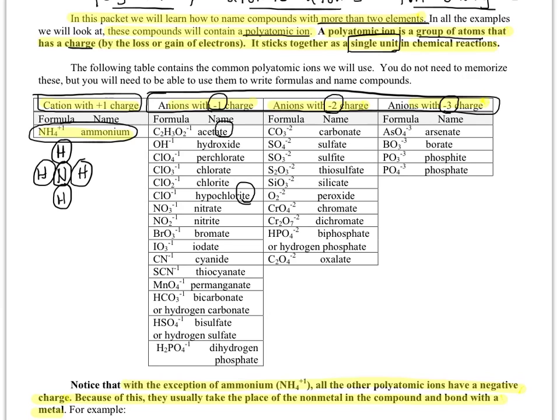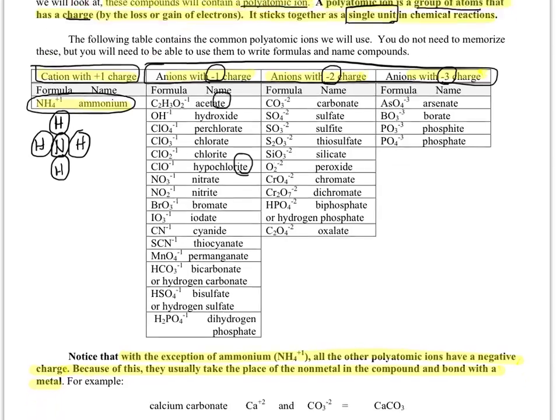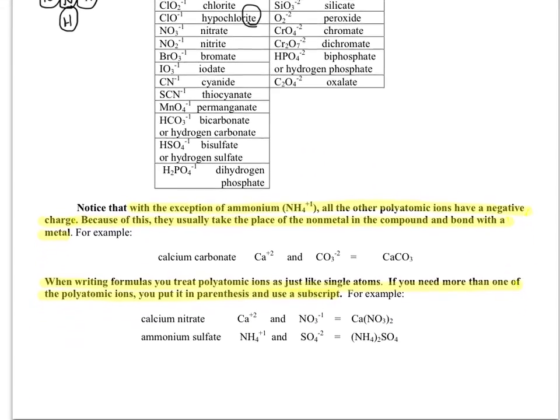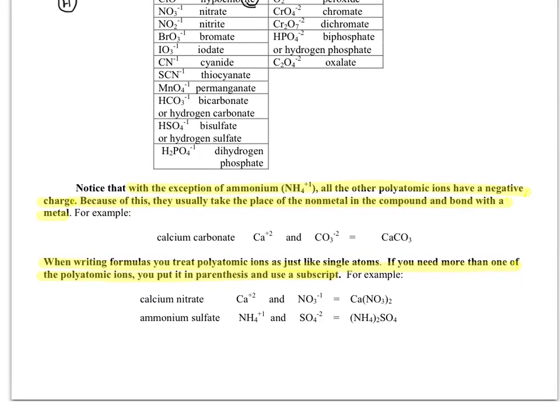So we said that NH4 ammonium is the only positively charged polyatomic ion. So with the exception of that NH4, all the others have negative charges and so they normally take the place of a nonmetal. So they kind of act like a nonmetal in a compound, meaning they're going to bond or be attracted to the positive charge of a metal.